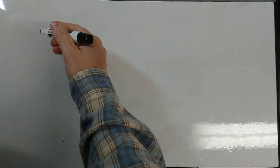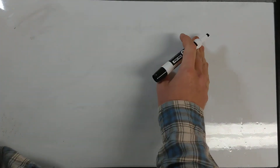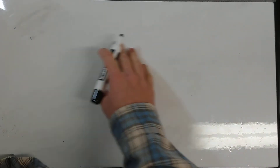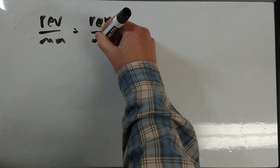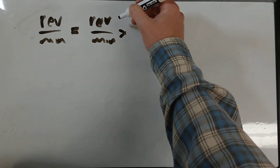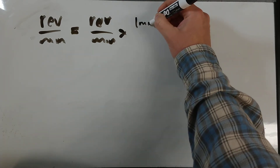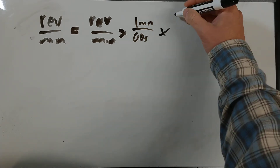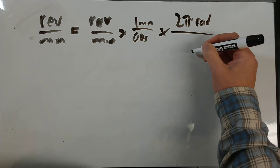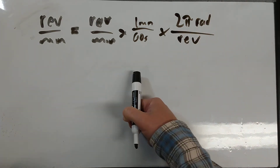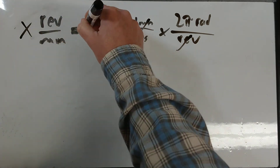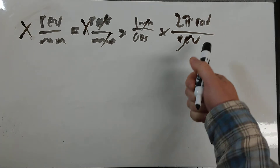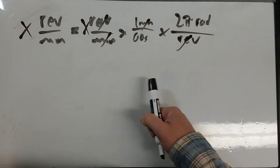So let's look at the worksheet — converting from revolutions per minute to radians per second and degrees per second. It's just dimensional analysis. Revolutions per minute, times one minute per 60 seconds — that gets seconds on the bottom — times 2 pi radians per revolution. That gives you radians per second. For degrees per second, you just put 360 degrees per one revolution.